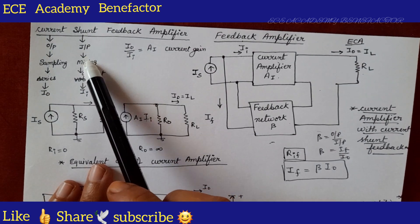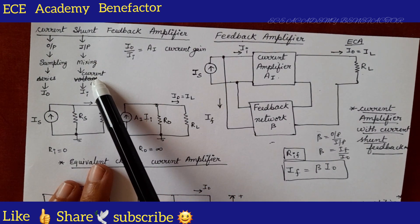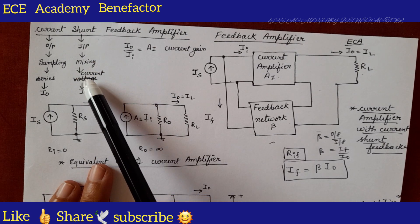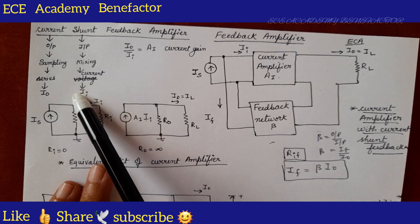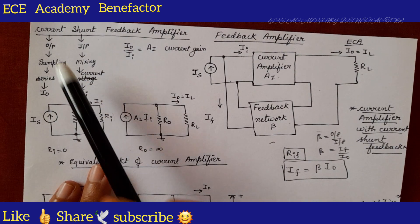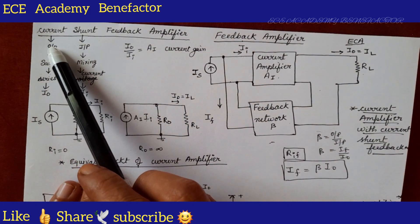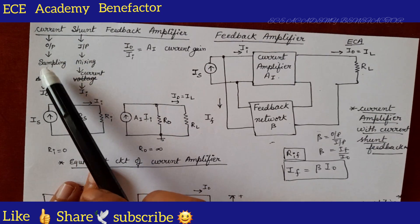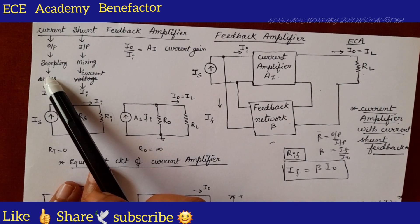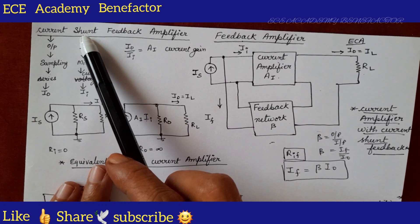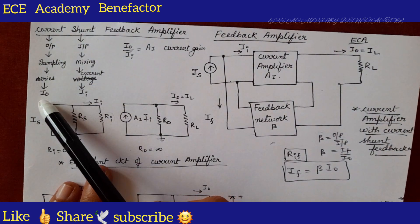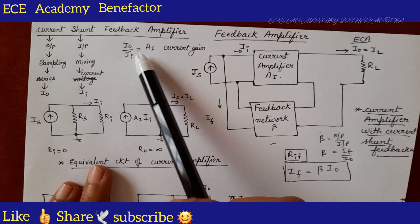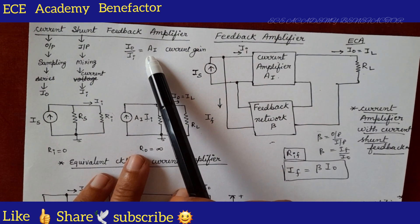Shunt mixing — if it is shunt mixing, current is mixed. If current is mixed, we need to place a current source, so we have taken the current II. First word: output current sampling means series connection at the output. Shunt connections at the input. If you take the ratio of output by input, I-naught by II, it is known as current gain AI.